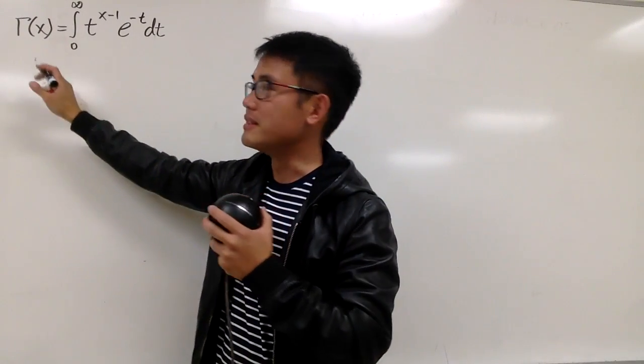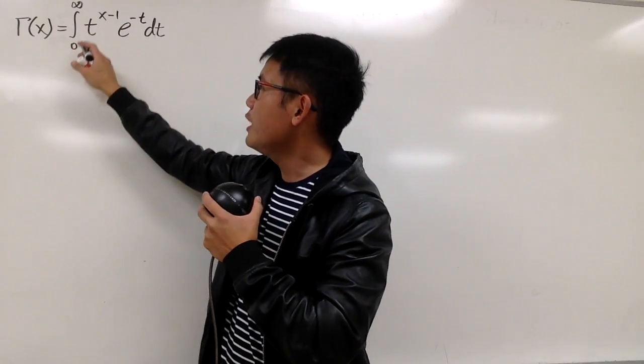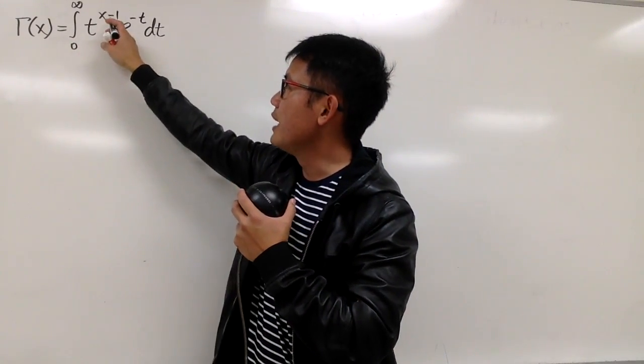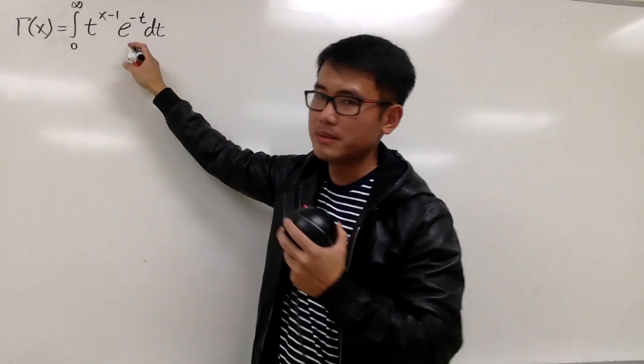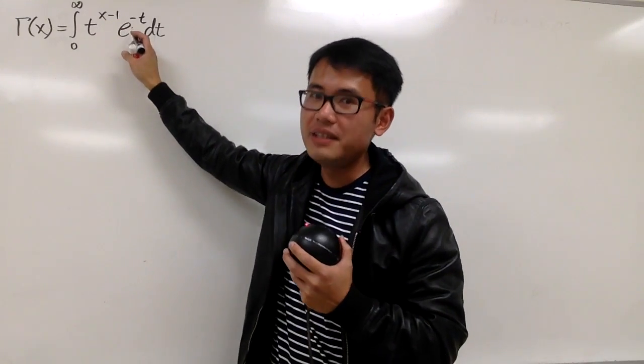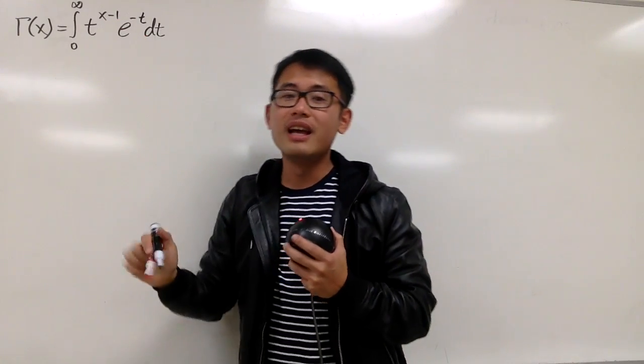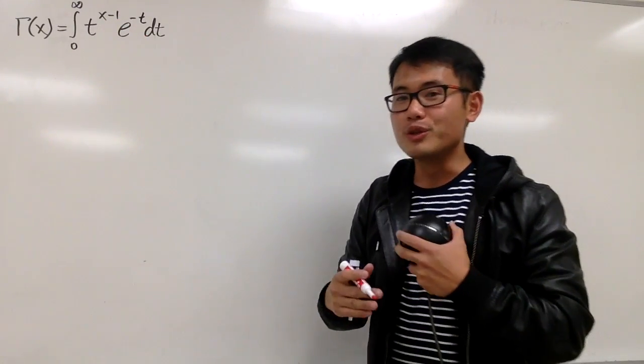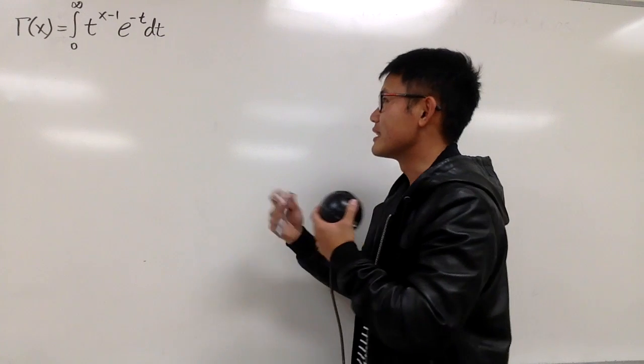Gamma of x is equal to the integral from 0 to infinity of t to the x minus 1 times e to the negative t, dt. And this is what we'll do first — we'll just take a substitution.